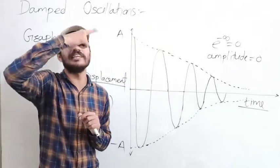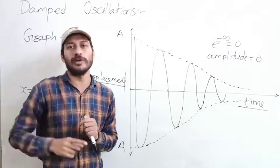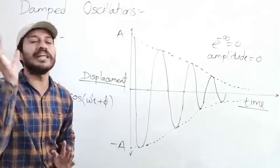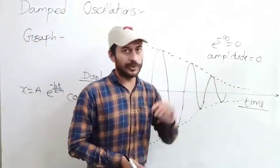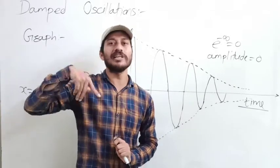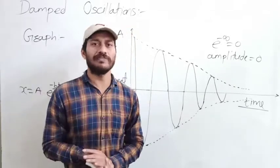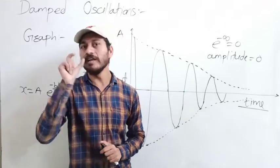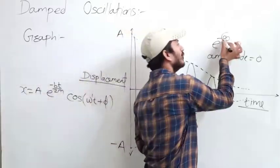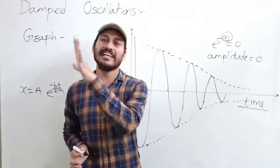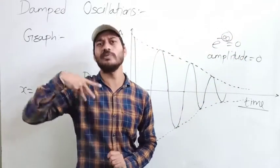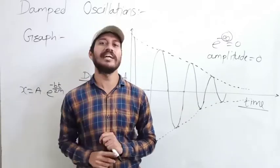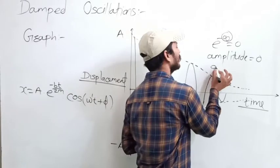In damped oscillations — as compared to simple harmonic motion — the amplitude becomes zero and the time is infinity. The basic understanding of infinity here means a very large or higher value.